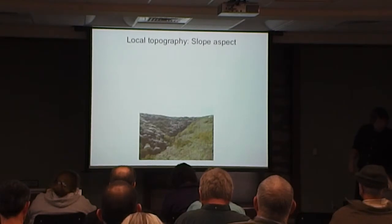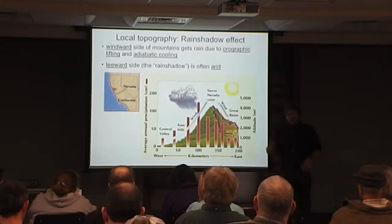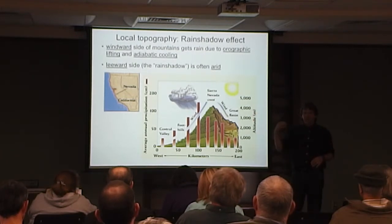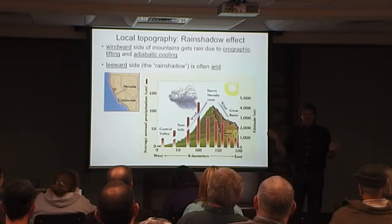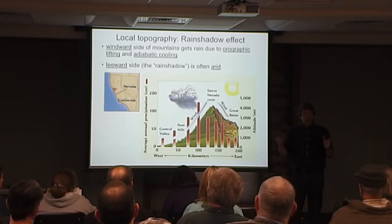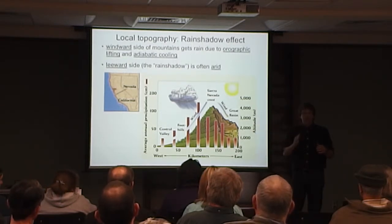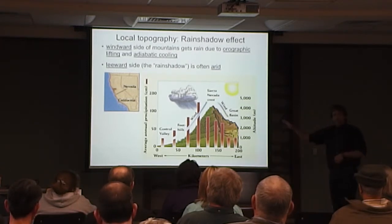Think about how that influences us. A lot of our air mass movement is from the western United States towards the east. So what do the Rocky Mountains do for the Great Plains? They set up a really strong rainfall gradient. The highest conditions are nearest the mountains — eastern Colorado, western Kansas. As you move further east from the plains, it gets progressively wetter. So we have a real strong rainfall gradient in the central plains based in part on that rain shadow effect of the Rocky Mountains.